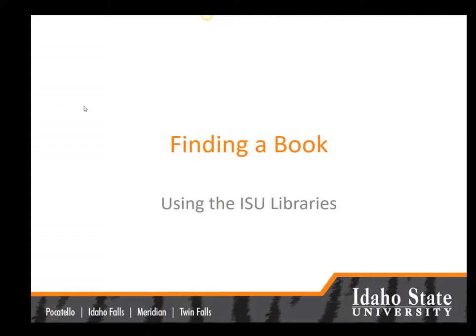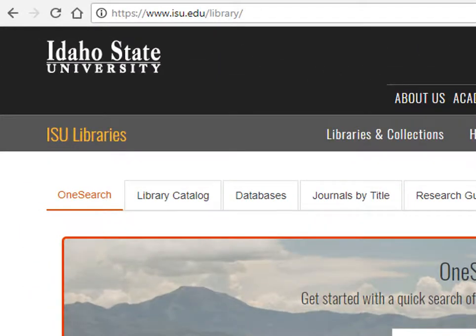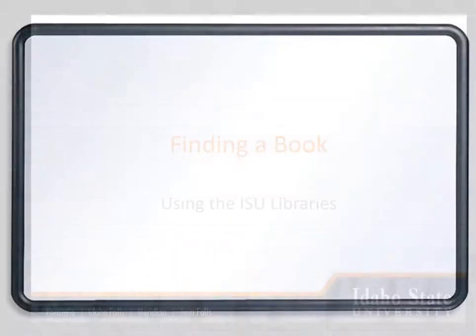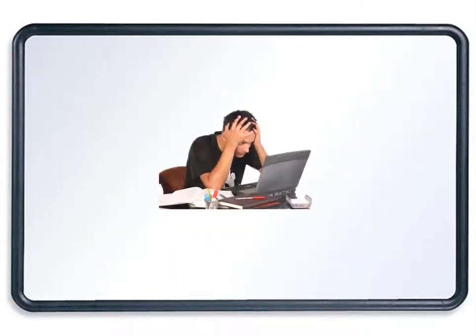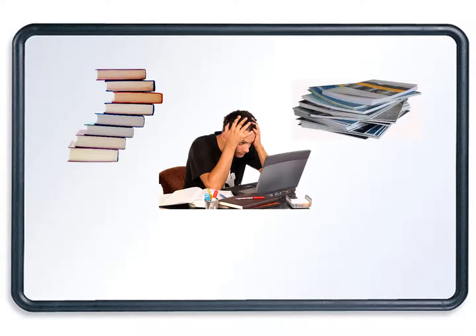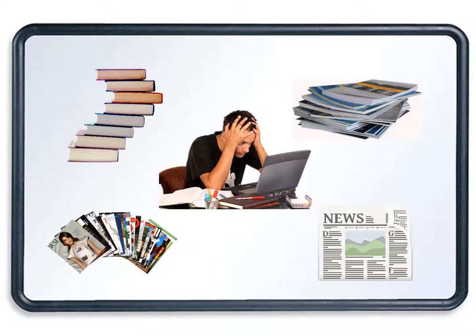This video is designed to help you know where you can go on the ISU Library's website to search for a book. In past semesters, some students have had difficulty distinguishing between different types of sources. Some databases include a mix of books, journal articles, magazine articles, newspaper articles, and other types of sources.